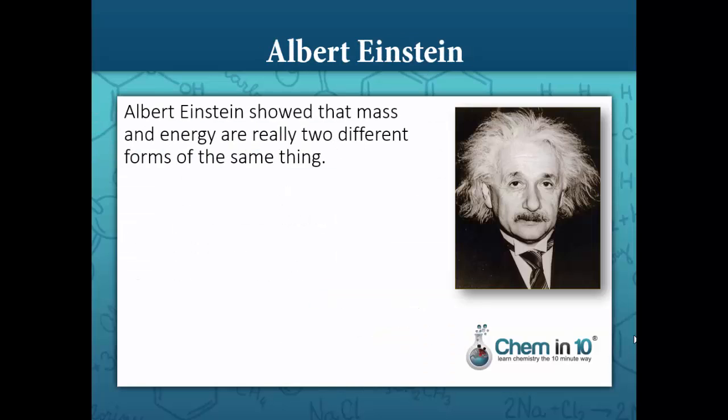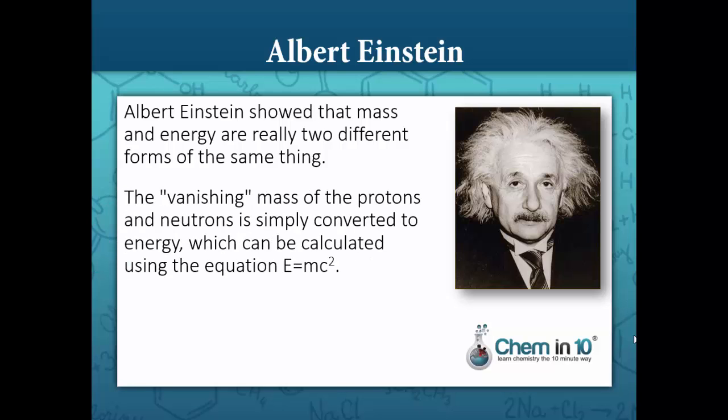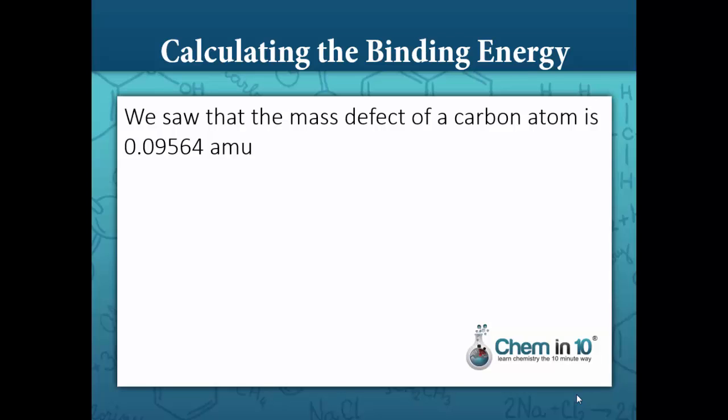But there's more. Albert Einstein showed that mass and energy are really two different forms of the same thing in his monumental equation E equals MC squared. So where does this vanishing mass go? It becomes energy and can be calculated using the equation E equals MC squared. The energy equivalent of the mass defect is called the binding energy.